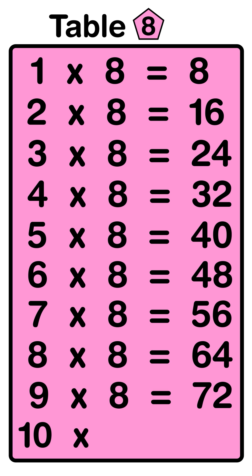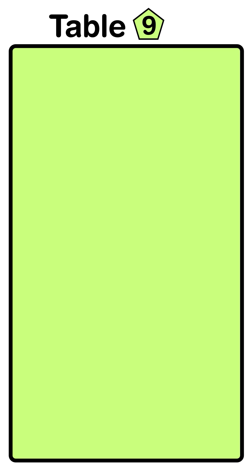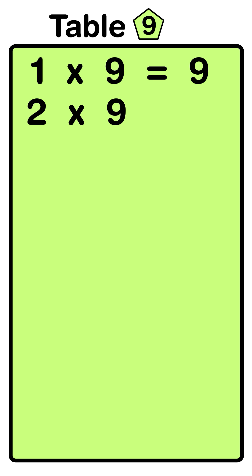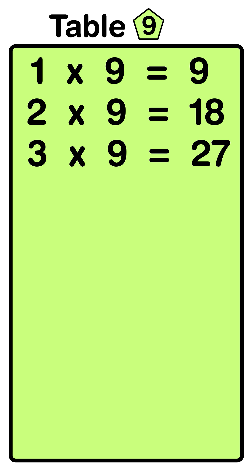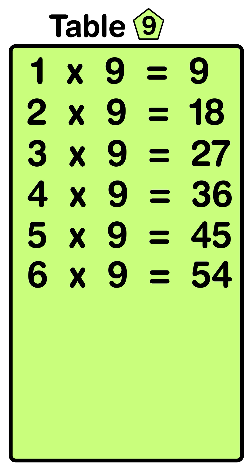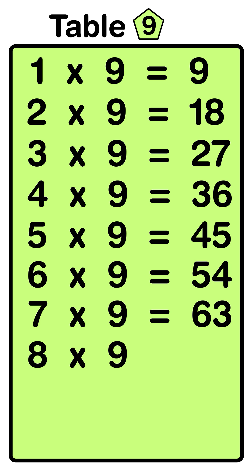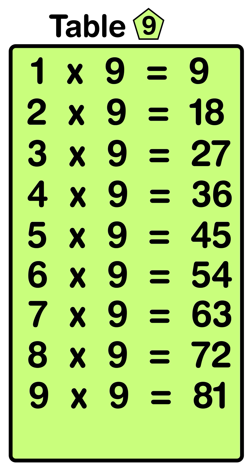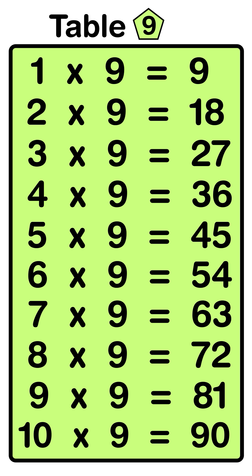Ten eight's are eighty. One nine's are nine, two nine's are eighteen, three nine's are twenty-seven, four nine's are thirty-six, five nine's are forty-five, six nine's are fifty-four, seven nine's are sixty-three, eight nine's are seventy-two, nine nine's are eighty-one, ten nine's are ninety.